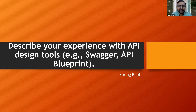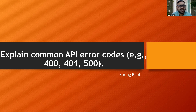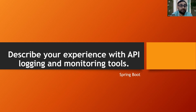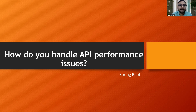API troubleshooting questions include: how do you troubleshoot API errors, and explain common API error codes such as 400, 401, and 500. For API logging and monitoring, tools like Zipkin are used. There should be a centralized logging repository where all logs from microservices come in, rather than separate logs per microservice — centralized logging is much easier to debug. Also, how will you handle API performance issues — focus on optimizing queries. A separate video exists covering API performance issues in detail.